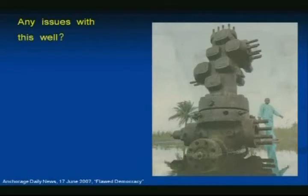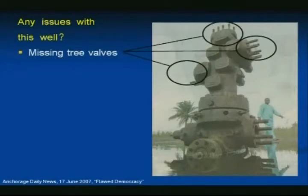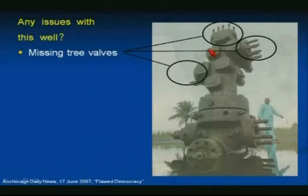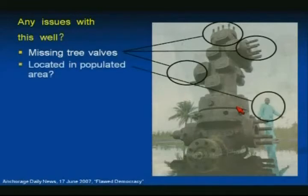Missing a lot of stuff. Let's run down the list of things I identified here. Missing tree valves — well, this looks like some sort of a dual unitized head, so you do see a master valve, wing valve, and swab valve or crown valve. The good news is the valve handles have been removed, so hopefully it would be difficult for someone to actuate those valves. This is a populated area, and we have an issue with hardening of locations to prevent theft. I don't see any fences or gates to prevent folks from removing materials from this well.